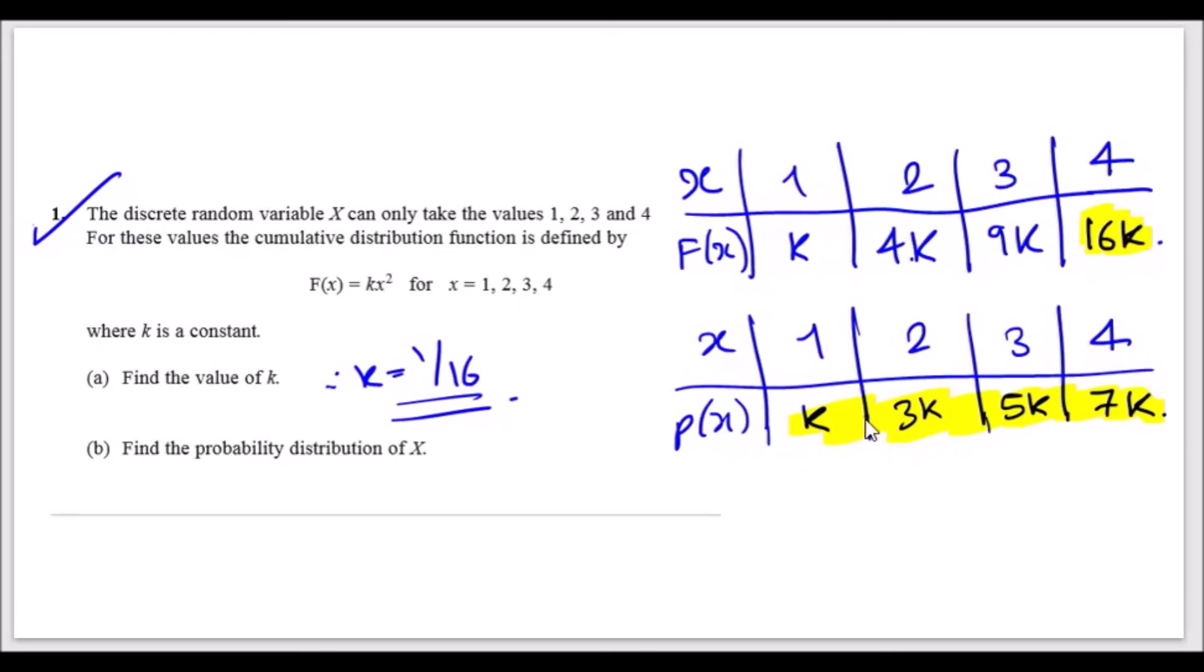So adding up the first two will make 4k, meaning this would be 3k because 4k minus k is 3k. The next one would be 9k minus 4k, which is 5k, and 16k minus 9k is 7k. That's literally how you calculate the probabilities from all of this.